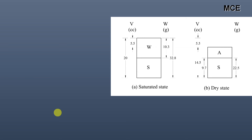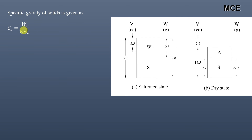Next, we find the specific gravity of solids from the phase diagram. Specific gravity is defined as the ratio of the weight of a given volume of solids to the weight of an equivalent volume of water: Gs = Ws / (Vs × γw). Ws is the weight of solids in the dry state, which is 22.5 grams. We now need to find Vs, the volume of solids.